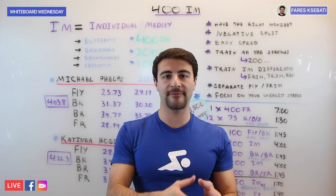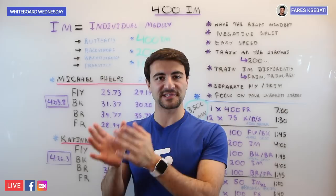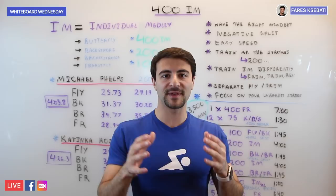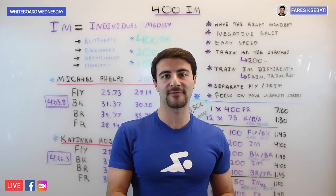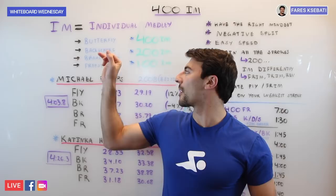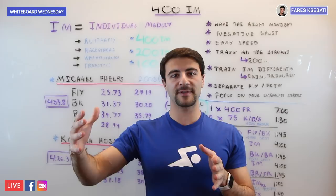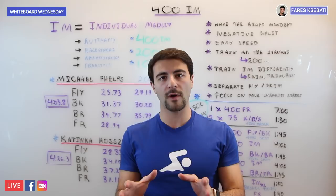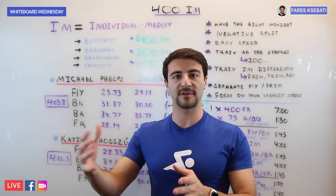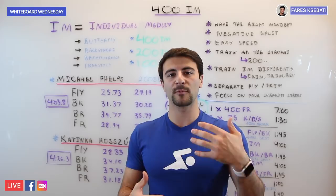We want the second 50 to be stronger than the first 50. The only exception is the first 50 because you're fresh, you have a dive, and you're going to be swimming faster on the first 50 butterfly than on the second. But for each of the remaining three 100s — backstroke, breaststroke, and freestyle — your goal is to negative split by feel and by time. You'll build the first 50 and then swim strong on the second 50.